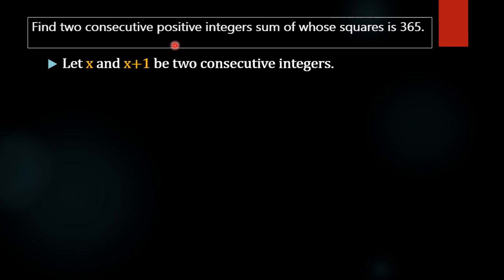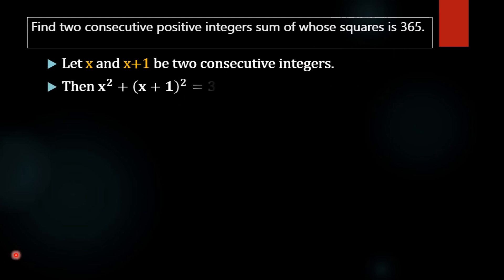It is given that the sum of whose squares is 365. So we write: x squared plus (x plus 1) whole squared equals 365.